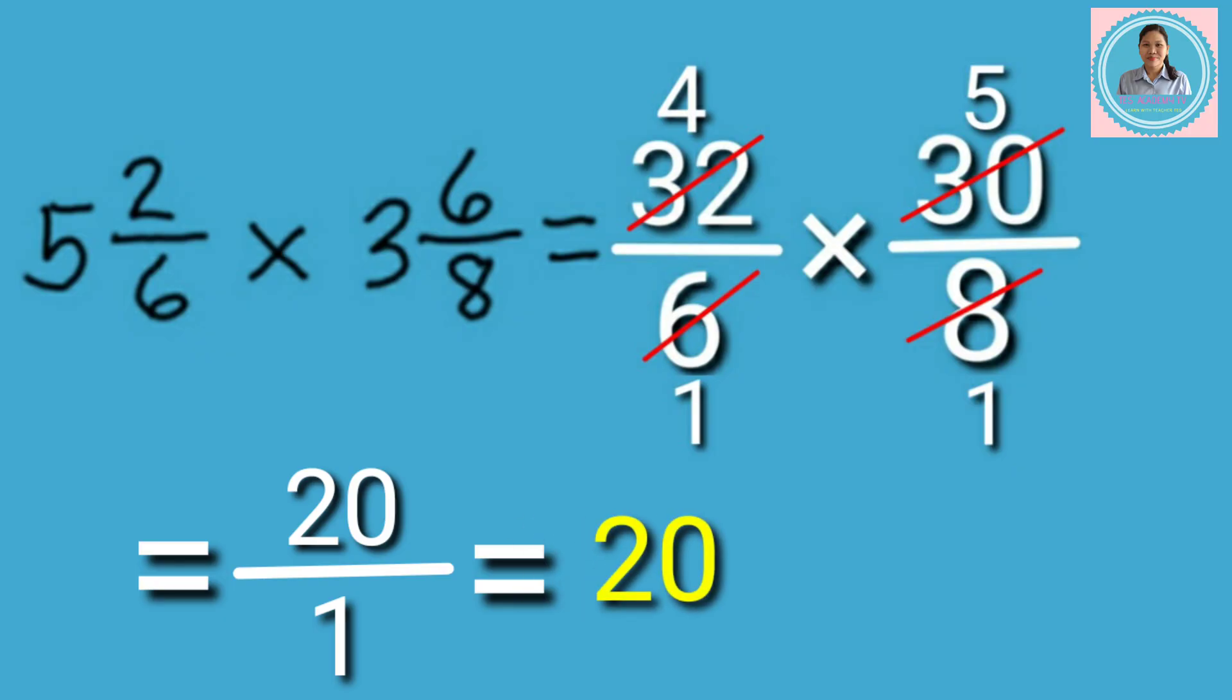So, the final answer is 20. Now, try to answer this one: 10 and 1 half times 2 and 2 sevenths. I hope you can get the correct answer. You can comment your answer in the comment box below.